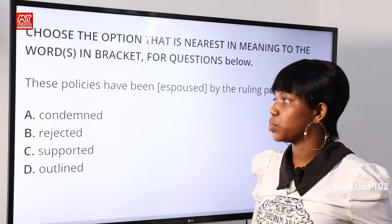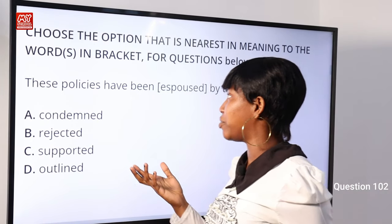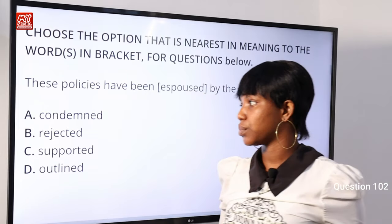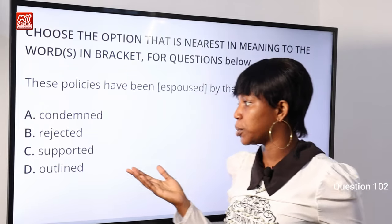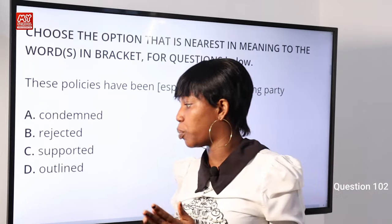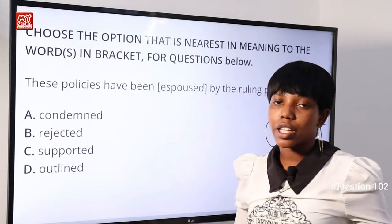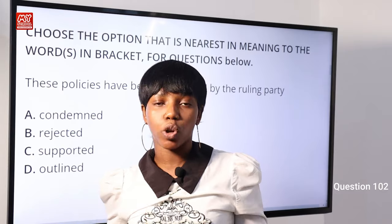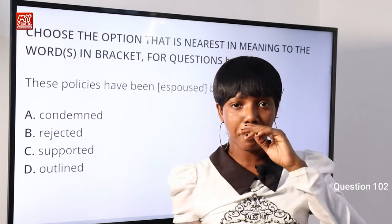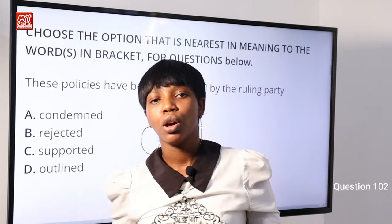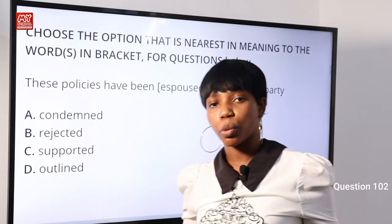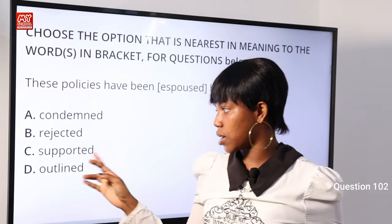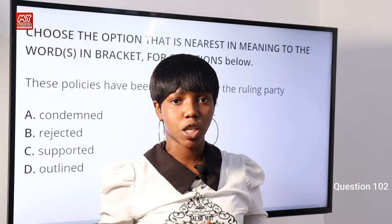Question 102: 'These policies have been espoused by the ruling party.' Options: A) condemned, B) rejected, C) supported, D) outlined. 'Espouse' means to support — beyond its primary meaning of getting married. Option C) supported is the nearest in meaning. Option C is the correct answer.